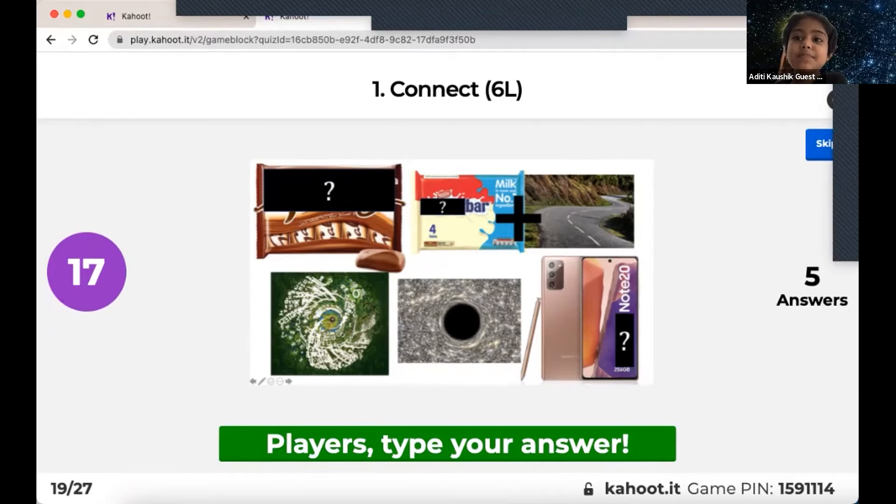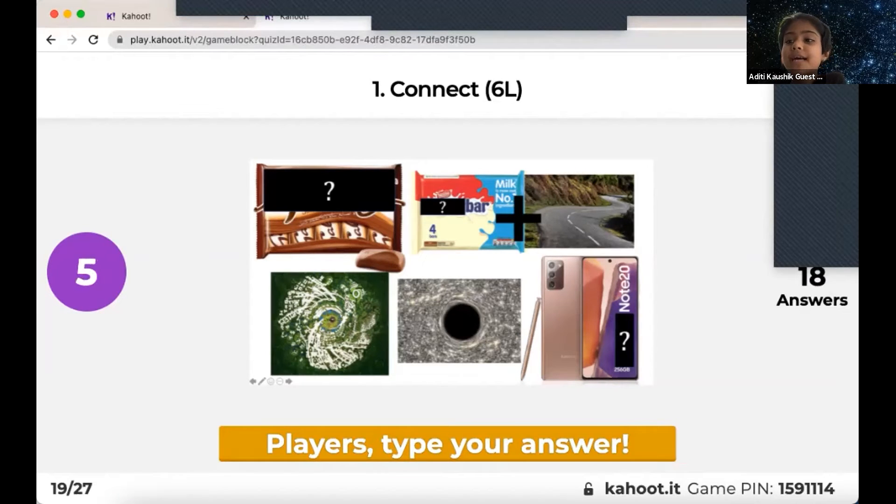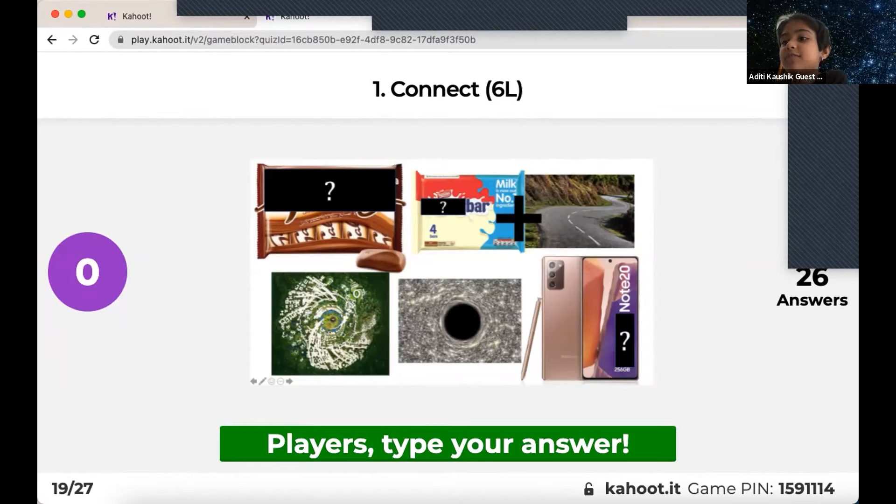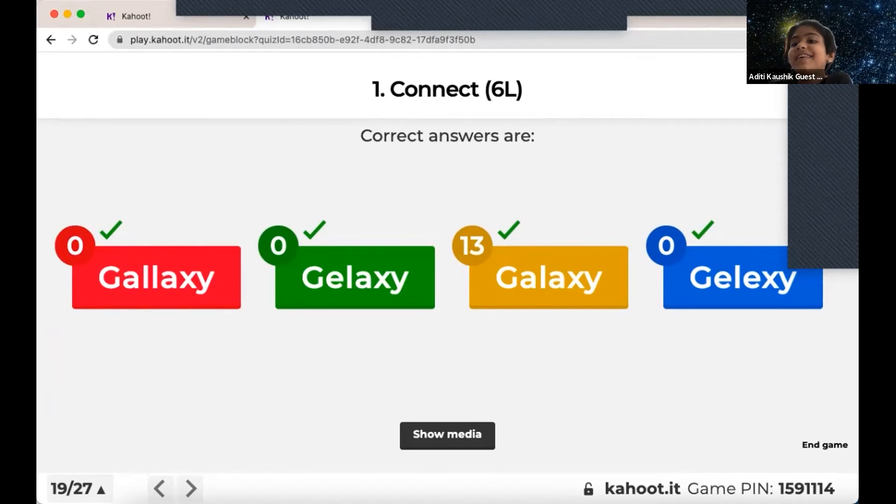Alright. So the first picture is a galaxy chocolate and the second picture is Milky Way, and the third picture is a plan, and in the middle there is a black hole and there is a Galaxy phone. If you connect this, you will get the answer.